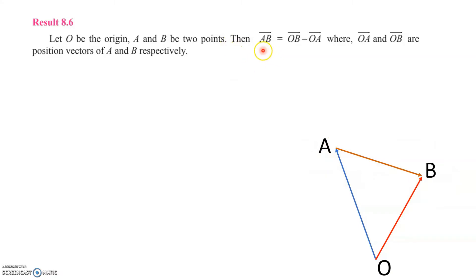Then the vector AB is equal to OB minus OA, where OA and OB are position vectors of A and B respectively.